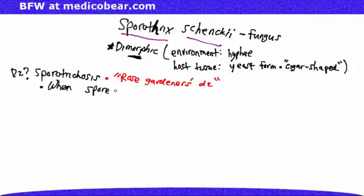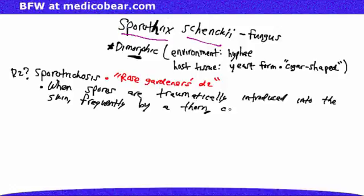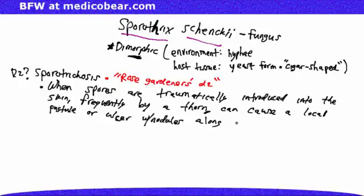When spores are traumatically introduced into the skin — frequently by a thorn — this can cause a local pustule or ulcer to form with nodules along draining lymphatics, which is commonly referred to as ascending lymphangitis.